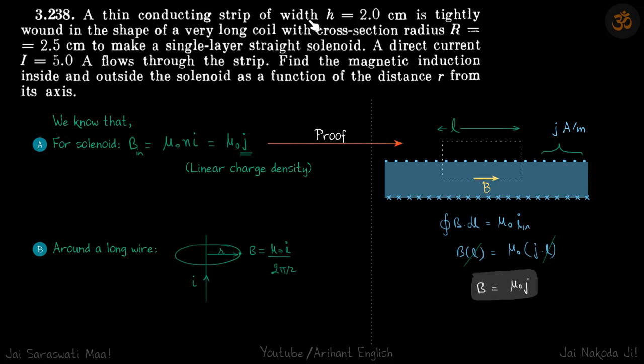In this question, we are given a solenoid coil made with a wire of width h. It's not our typical solenoid coil, so we cannot use our typical results for the field inside and outside.